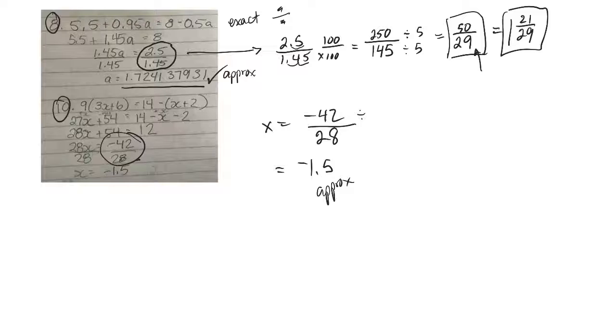So I'm looking for a number that'll divide both into 42 and 28. I think 7 will go into both of those. So if I divide both the top and bottom by 7, I'll get negative 6 on the top and 4 on the bottom.